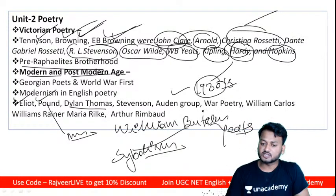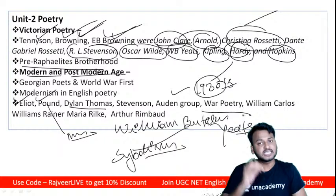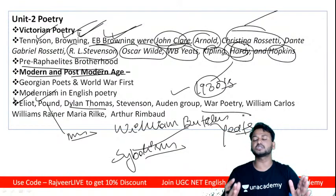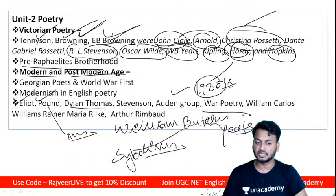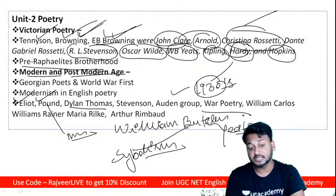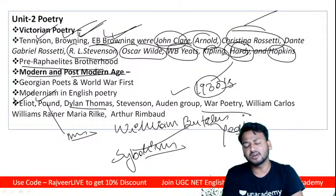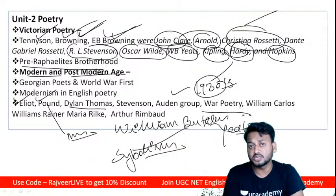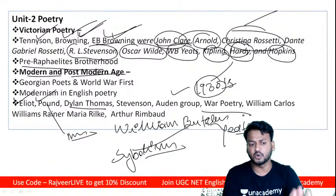Thomas Hardy is also among the important figures. On world literature, you have writers like Richard Wright from Australia, and in the modern and postmodern time period, Indian writing in English is also included with different poets.